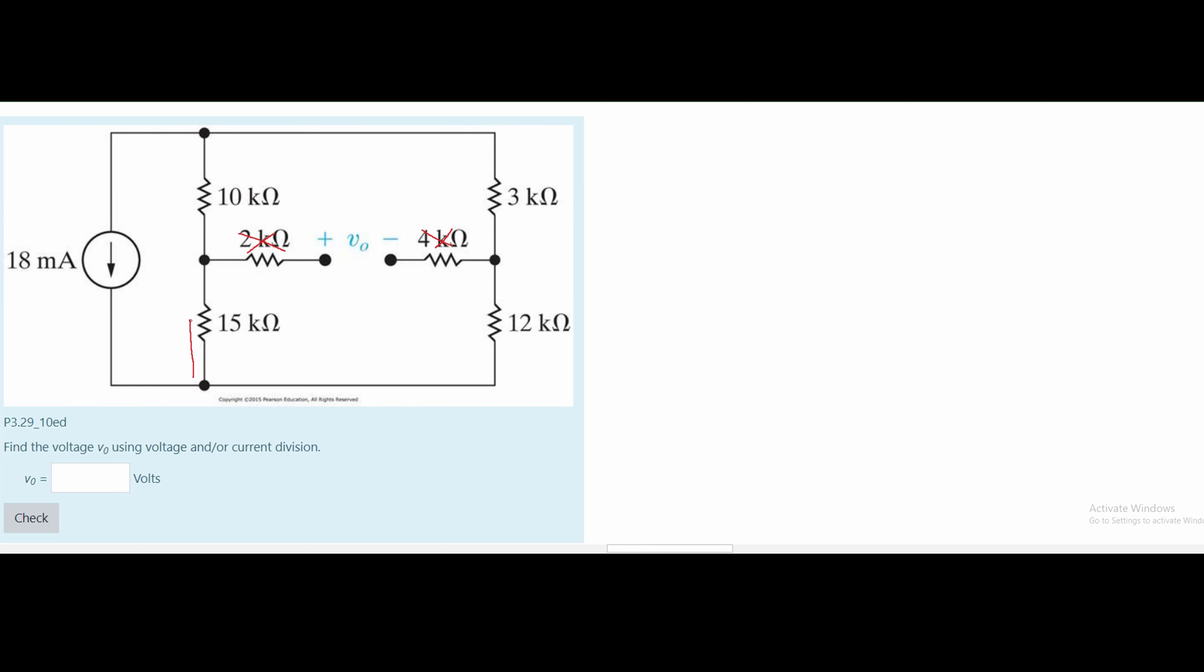Our current is going to be going up this way and this way. After it splits from this middle node right here, it goes into parallel between these two sides. This first side's resistance is this 10kohm resistor and 15kohm resistor. We are going to call it R1 and this will be 25kohms of resistance. Since they're in series, we can add them together.